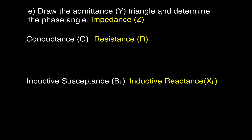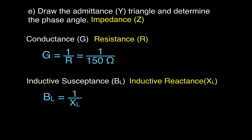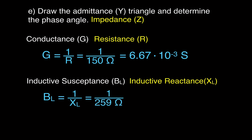Let's calculate that. The conductance is just 1 over R, and the inductive susceptance is 1 over the inductive reactance. So 1 over 150 equals 6.6 times 10 to the minus 3 Siemens, and 1 over 259 equals 3.86 times 10 to the minus 3 Siemens. S stands for Siemens. Now we have the conductance and the inductive susceptance.